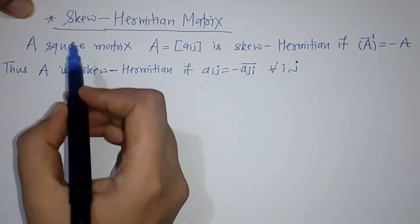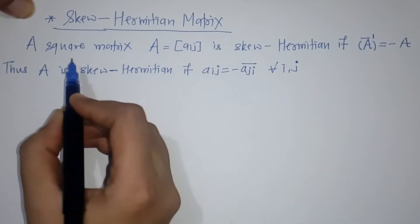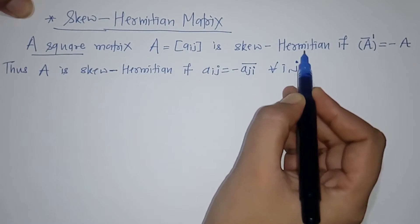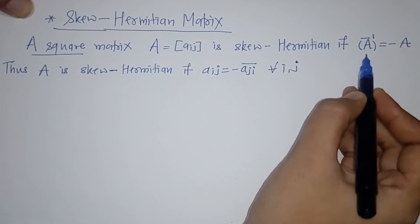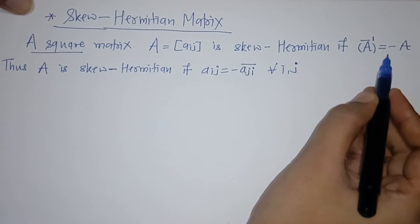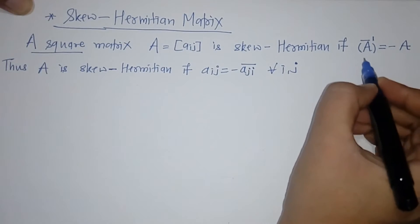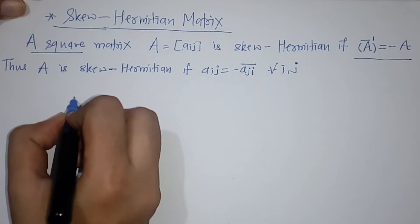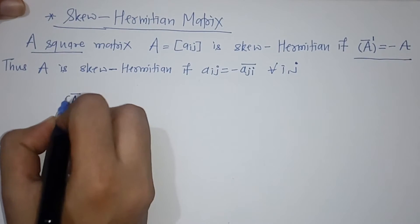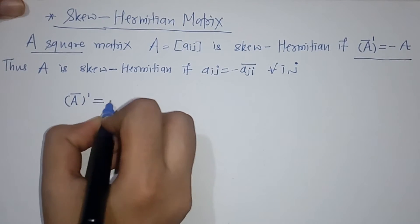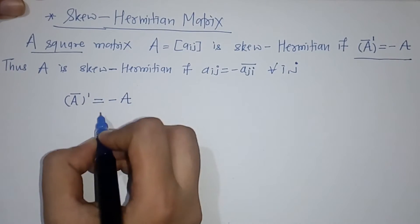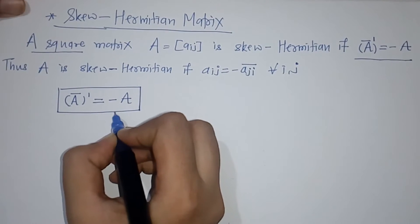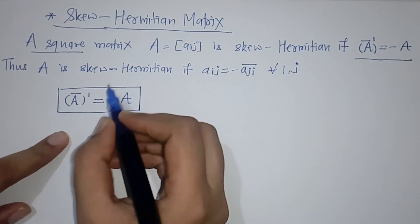Hello everyone, today we are going to see skew Hermitian matrix. A square matrix A is skew Hermitian if the transpose of the conjugate matrix equals minus of the original matrix A. So we have the transpose of conjugate matrix equals to minus A. If this condition is satisfied, we call matrix A a skew Hermitian.